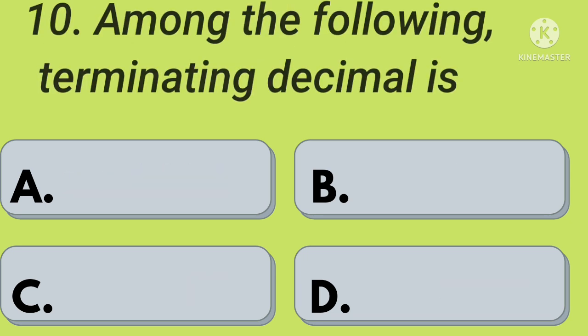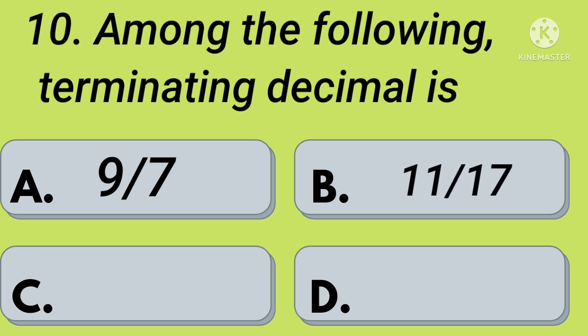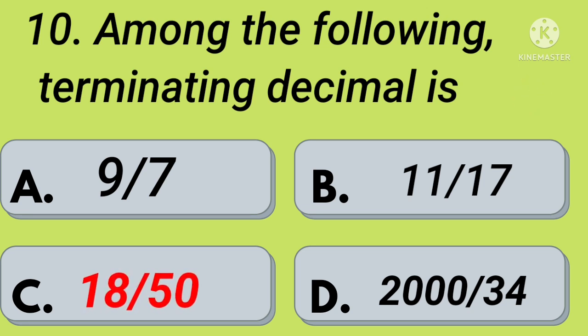Tenth question: among the following terminating decimals — option A: 9 by 7, option B: 11 by 17, option C: 18 by 50, option D: 2000 by 34. Your time starts now. Right, option C: 18 by 50.